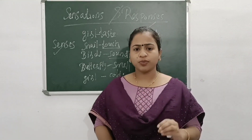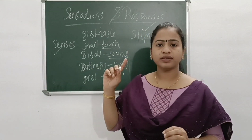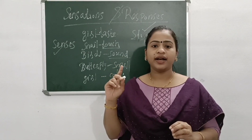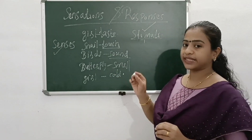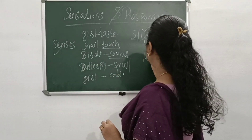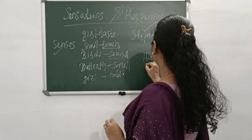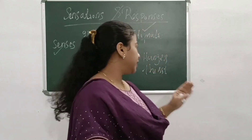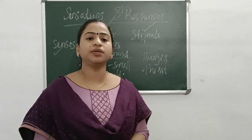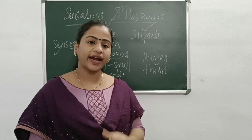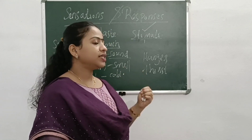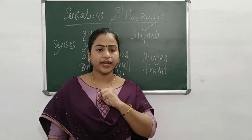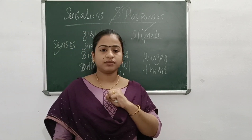Do we get stimulus only from the surroundings? No. For example, hunger and thirst — these are also stimuli, but they are produced inside our body. So we can classify stimulus into two types.